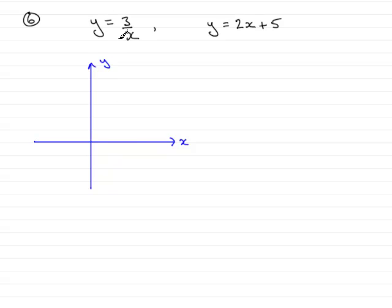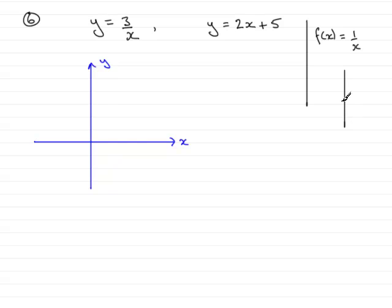The graph of y equals 3 over x — you should recognize this as a reciprocal graph. If we consider f(x) equals 1 over x, the reciprocal function, this graph is essentially shaped like this, going down and curving in both quadrants. The y-axis and x-axis are called asymptotes — that's where the graph doesn't cross the axis, it just tends towards them.